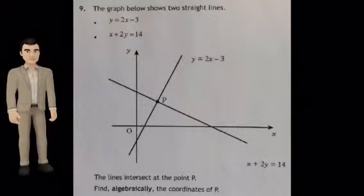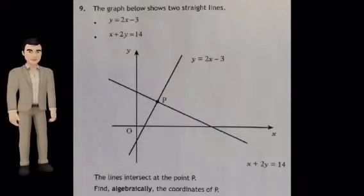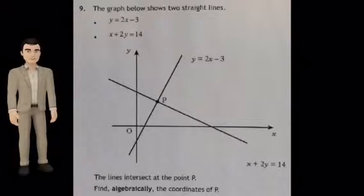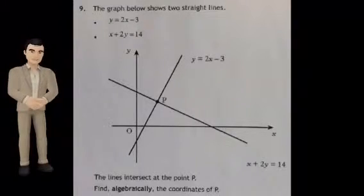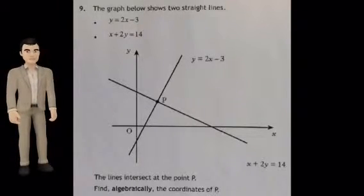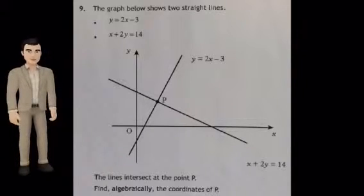The graph below shows two straight lines: y equals 2x minus 3, and x plus 2y equals 14. The lines intersect at the point P. Find algebraically the coordinates of P.